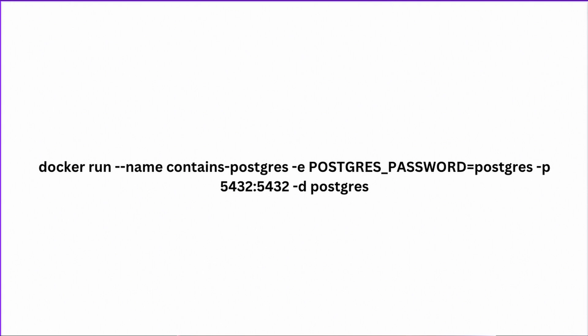The next thing is `-e`, which allows us to define environment variables for Postgres. This helps us define some security for our Postgres instance. I'm defining the password and setting it equal to `postgres`. There's a list of environment variables you can define, but I'm only defining the password and letting Docker use the default values for the rest. If you wanted to define the Postgres username, you could add `-e POSTGRES_USER` followed by the value, but I'm going to use the default, which is `postgres`.